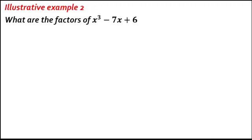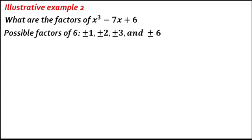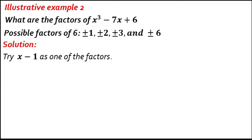Illustrative Example 2: What are the factors of x cubed minus 7x plus 6? Get the possible factors of 6: positive or negative 1, positive or negative 2, positive or negative 3, and positive or negative 6. Choose a factor. Try x minus 1 as one of the factors. Using synthetic division, write down the numerical coefficients of x cubed minus 7x plus 6: 1, 0 (no quadratic term), negative 7, 6.